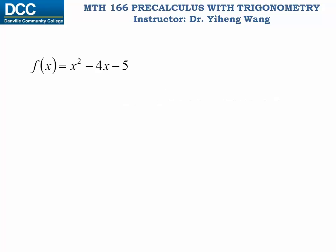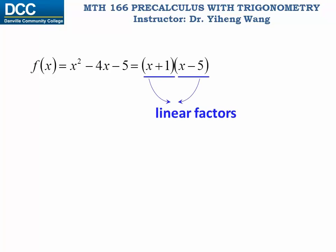For example, for this quadratic function, if we want to find the zeros for it, we already learned that if we can rewrite it into a product of two linear factors, then we can easily tell that the zeros are x equals negative one and x equals five.